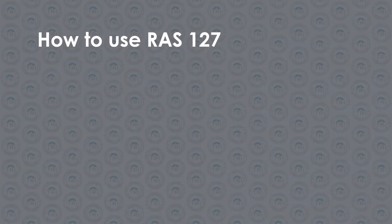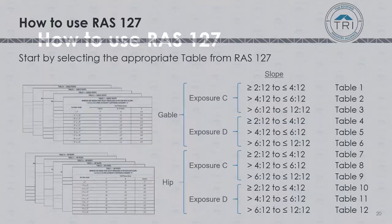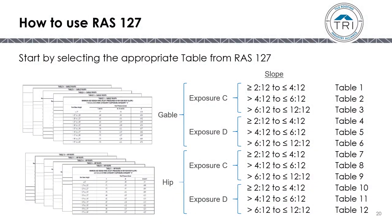To use RAS-127, start by selecting the appropriate table. First, determine whether it is a gable or hip roof. Then determine whether it is Exposure C or D. Finally, determine which roof slope range it falls into. Remember there are 12 tables, so it is important to identify the correct one.